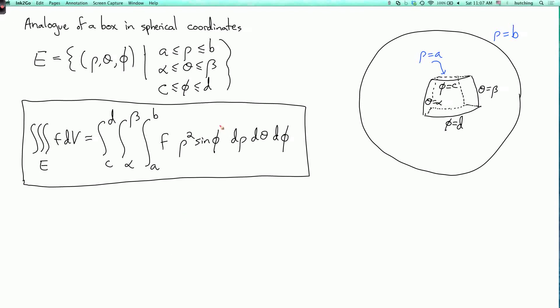And then we have d rho d theta d phi. So here's our new magnification factor. We'll explain in a minute where this comes from. And since this is the analog of a box, you can do the integral in any of six possible orders. So we'll see examples of this soon. And now let me explain where the magnification factor comes from.